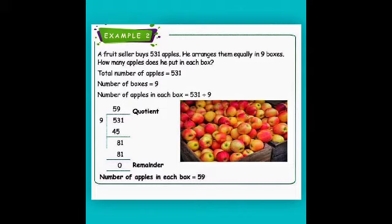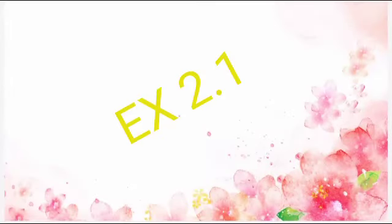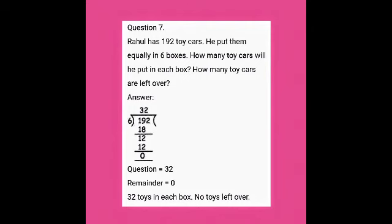We've completed the examples. Now we are going to see the exercise. I'm going to teach you only the word problems; the other sums are homework. Exercise 2.1, question number 7: Ragul has 192 toy cars. He puts them equally in 6 boxes. How many toy cars will he put in each box? How many toy cars are left over? 'Left over' means we will get a remainder.